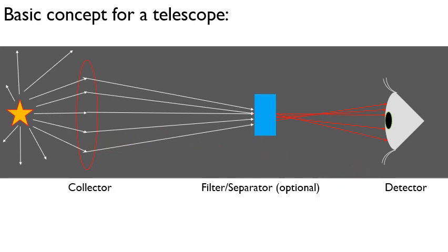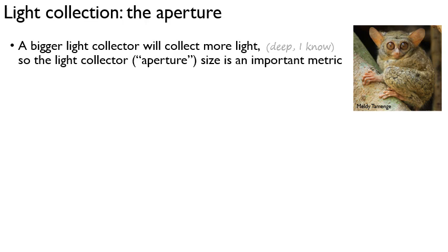The key for light collection is the aperture. The bigger the light collector we have, the more light we're going to collect. So the size of an aperture is a very important metric for our telescope. Typically speaking, your aperture is going to be something circular, and so the light collecting area of your aperture is the area of a circle, which you remember from geometry as pi r squared. This is your constant pi, 3.14159 and so on, and r is the radius of the circle, which is squared.